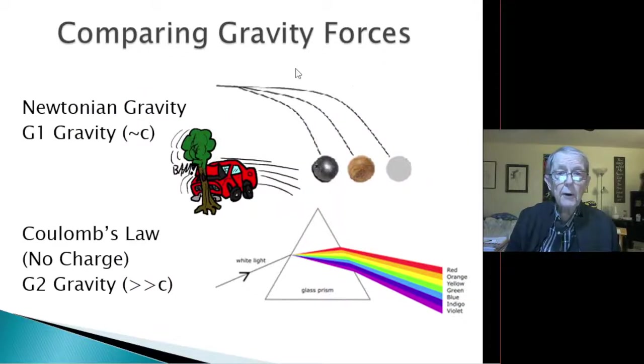So let's compare gravity forces. Newtonian gravity, G1 gravity, which moves at about speed C, is the controlling force when you throw three balls with the same force and the same horizontal plane. It's a lead, wood, and cotton ball. Gravity, Newtonian gravity, or Einstein's gravity, will cause them to flow that way. It's very obvious, you can go outside and do that.